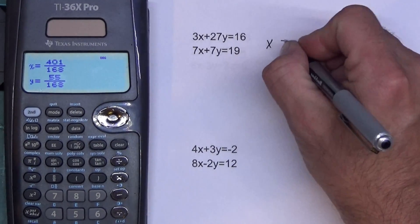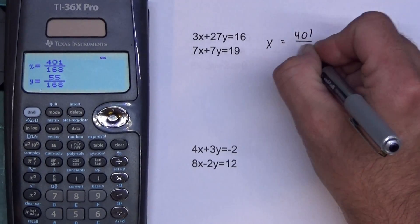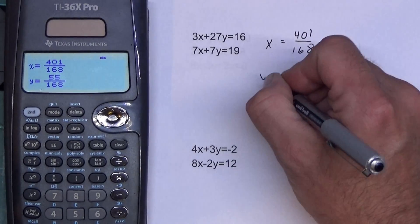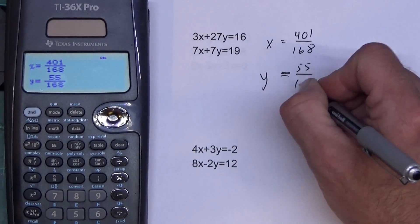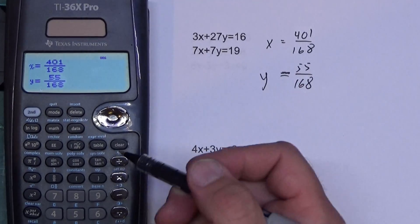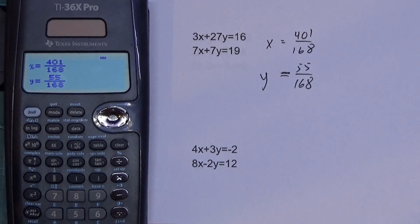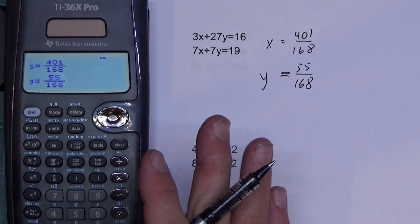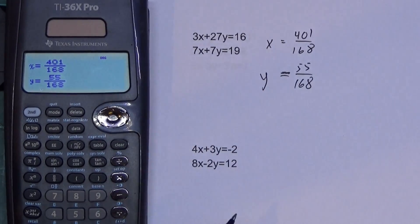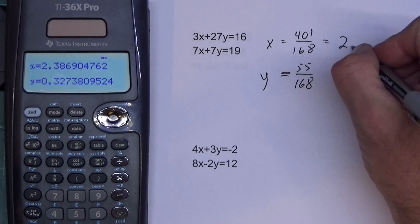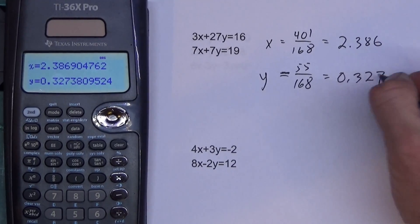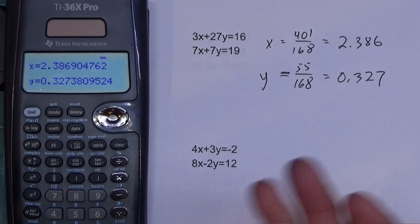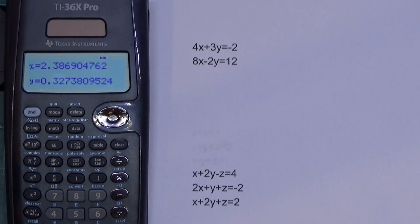And it tells me X is 401 over 168, Y is 55 over 168. This calculator has a nasty habit of giving everything in fractions. Never gives you decimals. If you want decimals, you just press a button right above enter, and it'll tell you this is 2.386, and this one is 0.327. So you can see solving this is actually pretty simple.